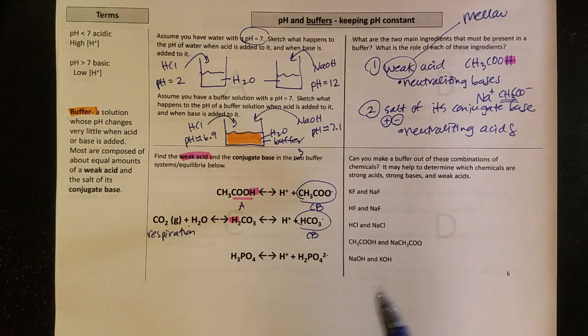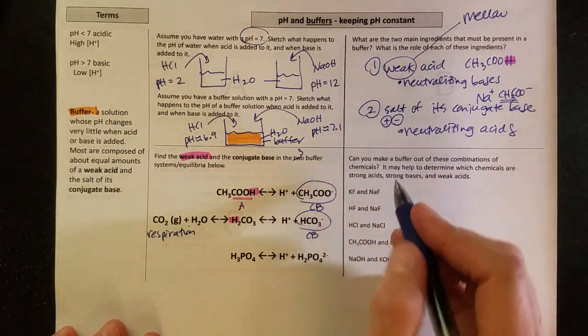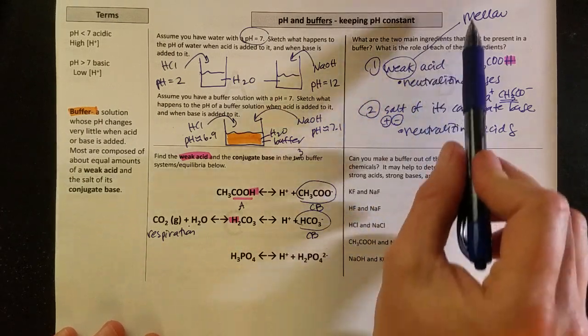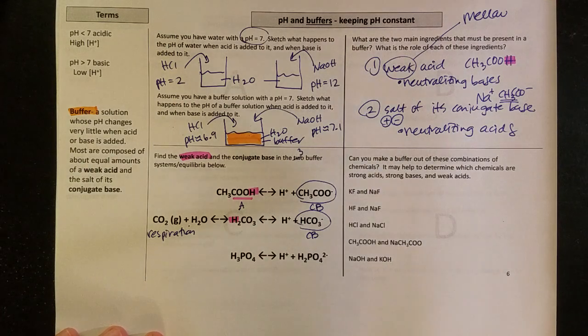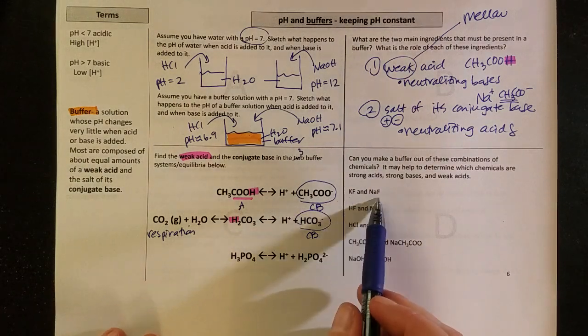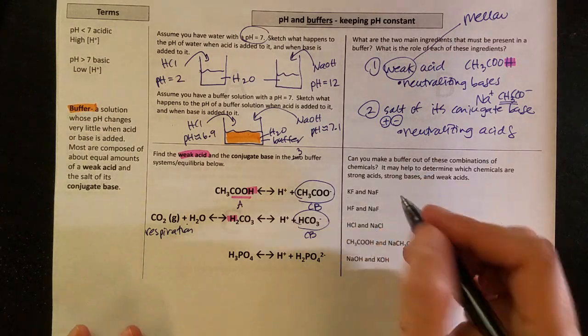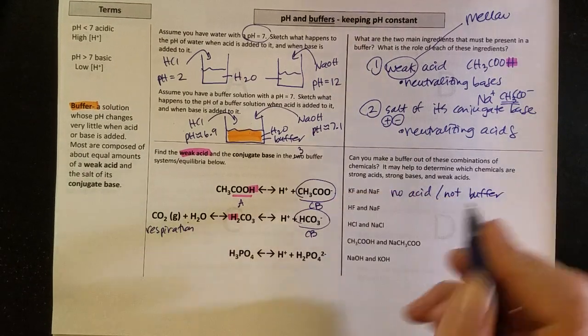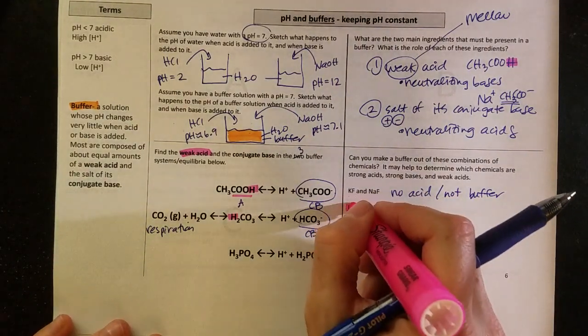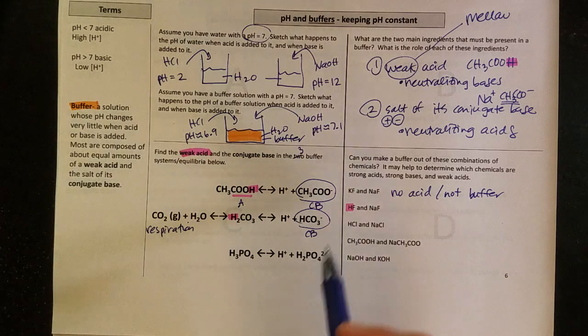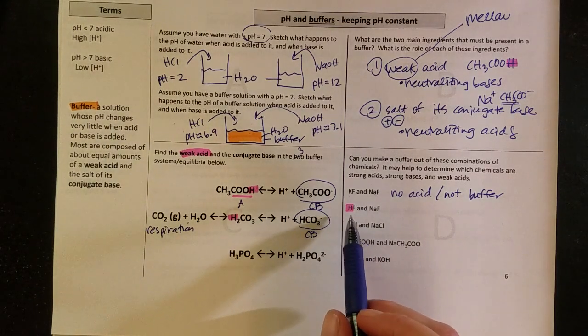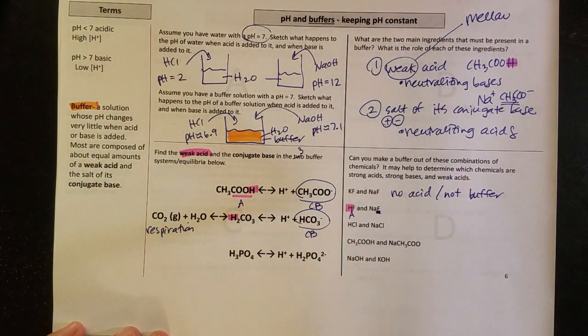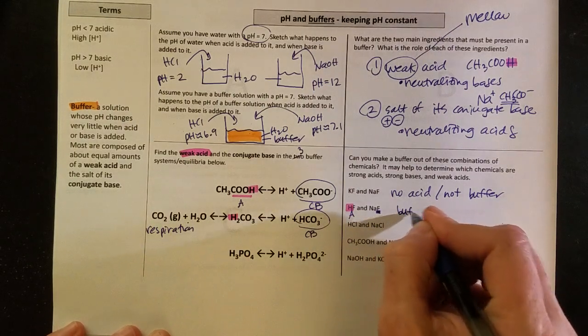Last thing we can do on this page with buffers is think about, can I make a buffer out of these combinations? And remember, I'm looking for these two ingredients. So weak acid, something mellow, with its conjugate base. So as I look here, I don't see any acids at all. There's no Hs. So it's not going to be a buffer. When I look at the next combination, I see a proton. It's not HCl, so I'm thinking it must be a weak acid. You can make that assumption in this class. So I see that acid, and then I see its conjugate base in a salt. And so yes, this would make a buffer.